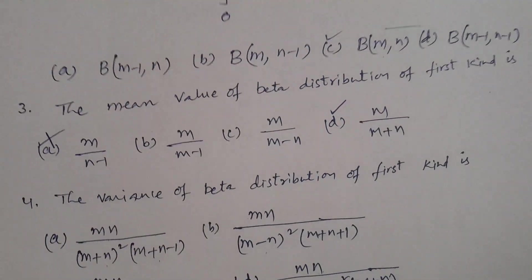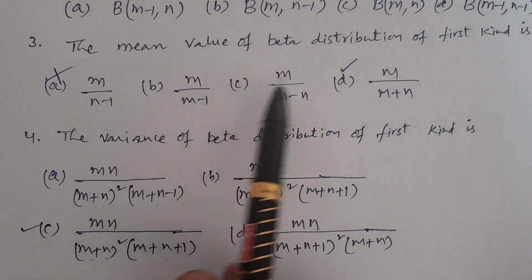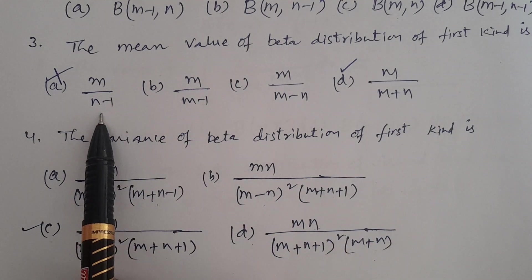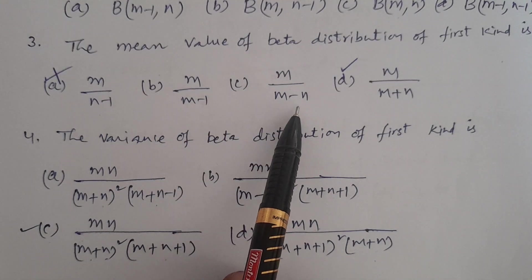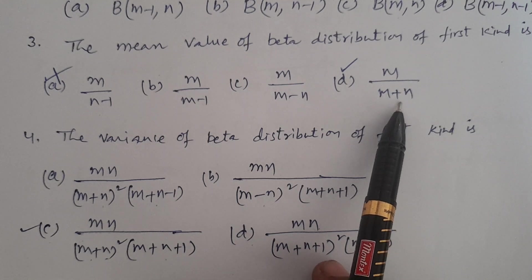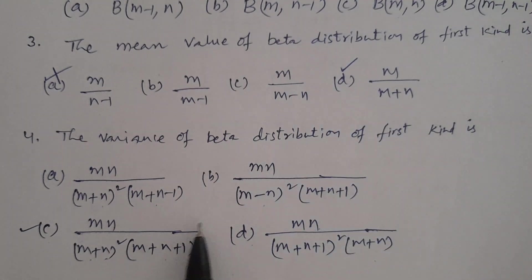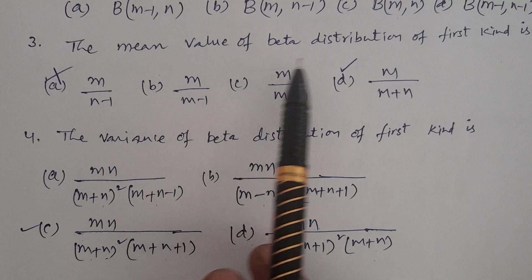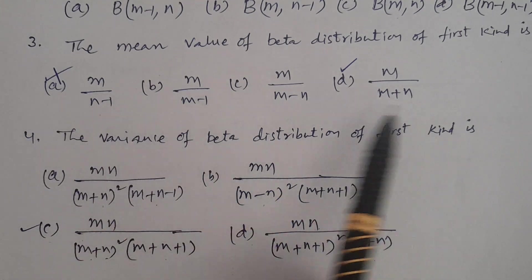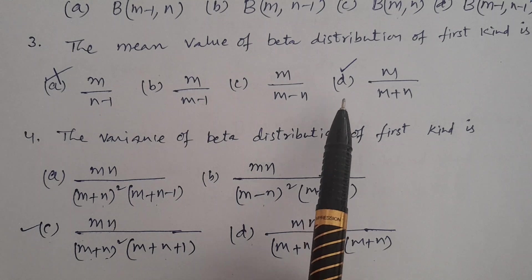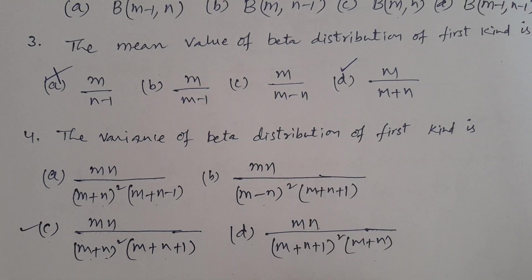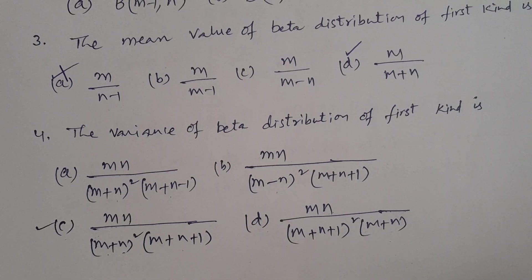Question number 3: The mean value of beta distribution of first kind. Options: m/(n-1); m/(m-1); m/(m-n); m/(m+n). The correct answer is m/(m+n). In Telugu — the mean value of beta distribution of first kind: correct answer is Option D, m/(m+n).